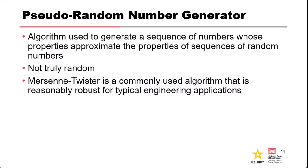A random number generator is a computational procedure or algorithm that generates a sequence of numbers whose properties mimic the properties of random numbers. There aren't truly random numbers — we call them pseudo-random because in principle, if you know the algorithm you can know the sequence. But in the sense that they have the same properties as random numbers, they effectively are random. Mersenne Twister is probably one of the more commonly used algorithms — reasonably robust for typical applications, and used in Microsoft Excel.